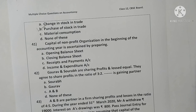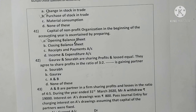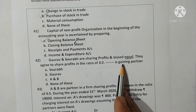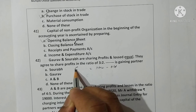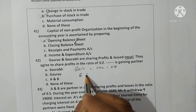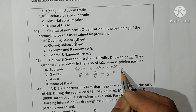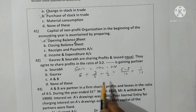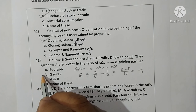Question forty-one: the capital of a non-profit organization at the beginning of the year is ascertained by the opening balance sheet. Option A is correct. Question forty-two: Gaurav and Sarov are partners sharing profits equally; they agree to share profits in ratio 3:2. Gaurav's new ratio is 3/5, old ratio is 1/2; gaining ratio = 3/5 − 1/2 = 1/10. Gaurav is the gaining partner. Option B is correct.